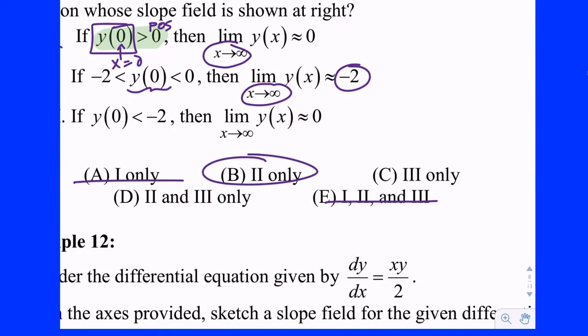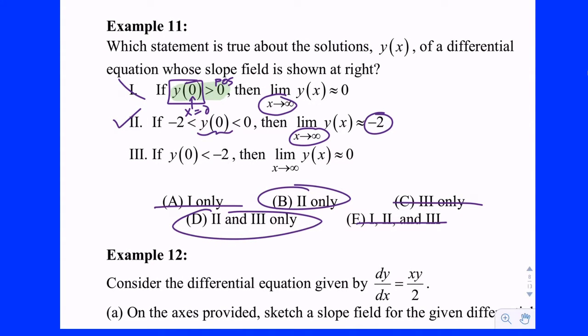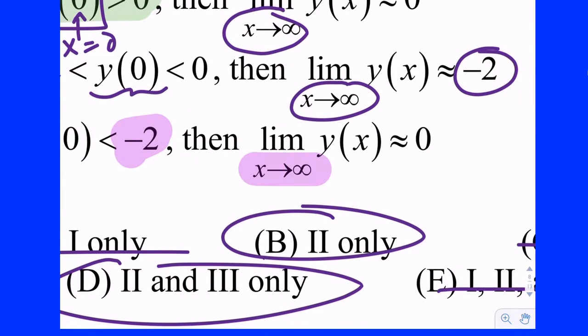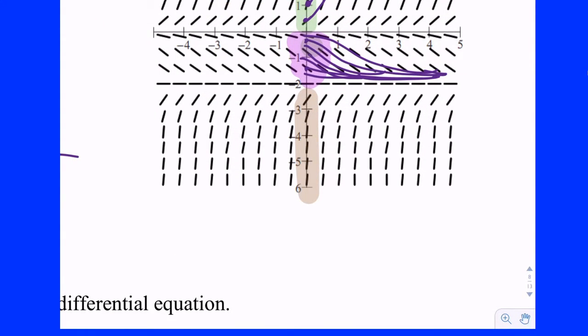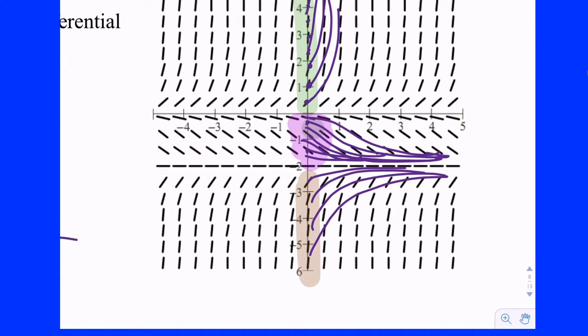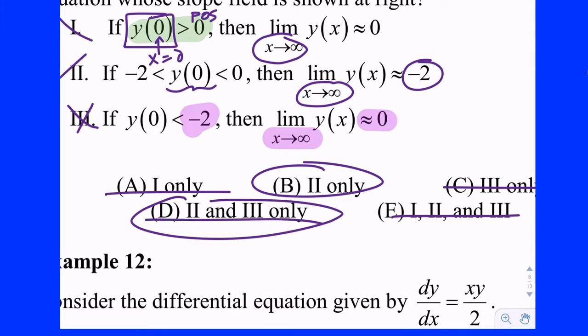So it's B or D, but not C. Statement 3: if y(0) is less than negative two — so you drop in below y equals negative two — are you approaching zero as x goes to the right? No. For the person not looking carefully, it does look like they're leveling off towards some horizontal line, but the x-axis is up above that. As they go to the right they're approaching negative two as well, not the x-axis. So statement 3 is false, and the answer is B.